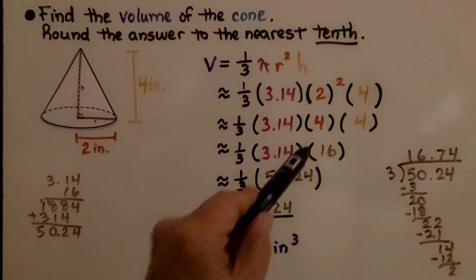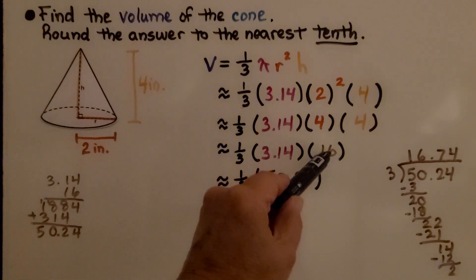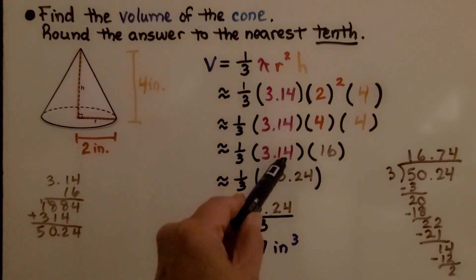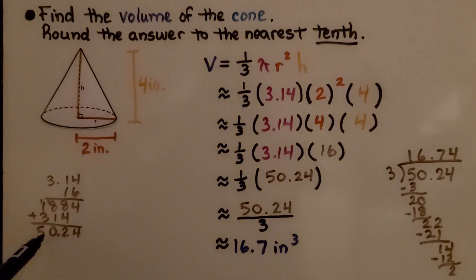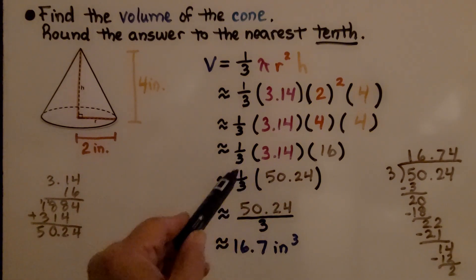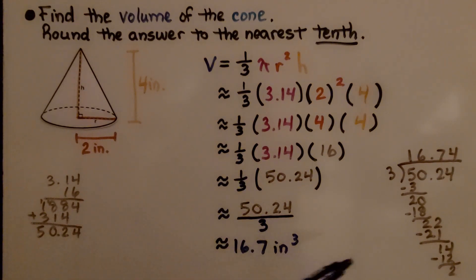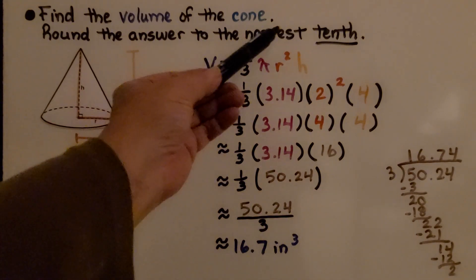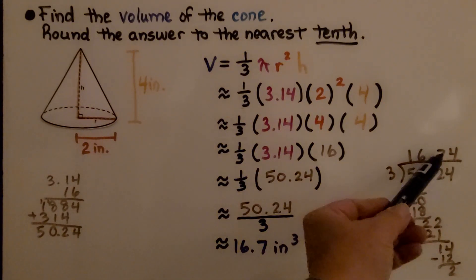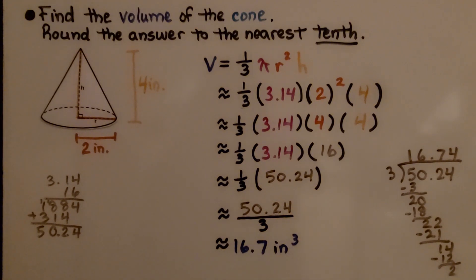We multiply 4 times 4 and get 16. We multiply 3.14 times 16 and get 50 and 24 hundredths. Now we can multiply this by a third or divide it by 3. Same thing. We get 16 and 74 hundredths to round it to the nearest tenth. The 4 tells the 7 to stay the same. We have 16 and 7 tenths inches cubed.